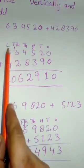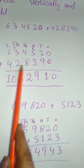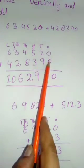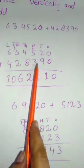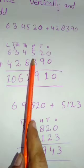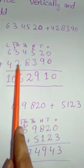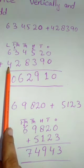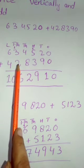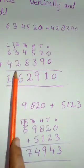Here we have our place values. We write the first number and the second number according to their place values. Because they both have equal numbers of digits, it is very easy to arrange them vertically. The lakh digit will be written at the lakh place, ten thousand at ten thousand place, and thousand at the thousand place.